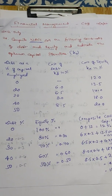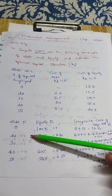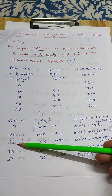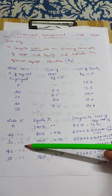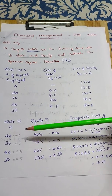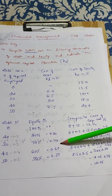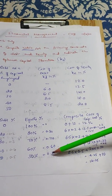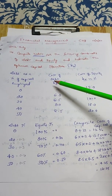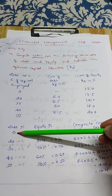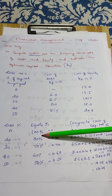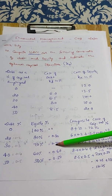Next, we have the proportion of debt. The proportions are already calculated: 20% is 0.2, 30% is 0.3, 40% is 0.4, 50% is 0.5. The corresponding equity proportions are 0.8, 0.7, 0.6, 0.5. The cost of debt column gives the KD values and the cost of equity column gives the KE values.